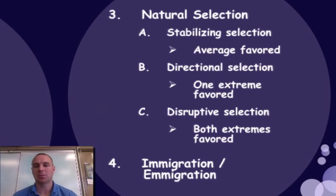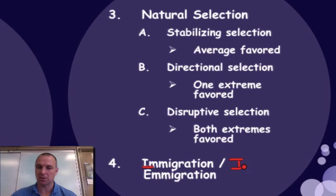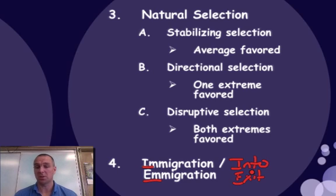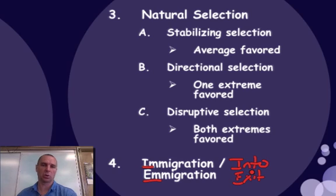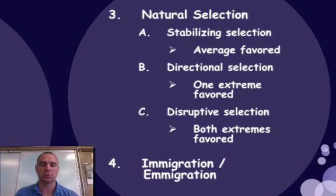The last mechanism is immigration and emigration. Immigration — with an I — means into. Emigration — with an E — means to exit. If organisms come into a population, that's going to increase the gene pool's allelic frequency and could cause evolution. If organisms leave a population, that could shrink the gene pool, also causing a genetic equilibrium change and driving evolution.